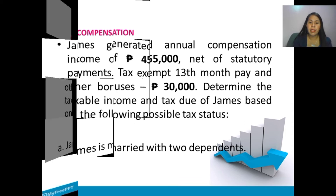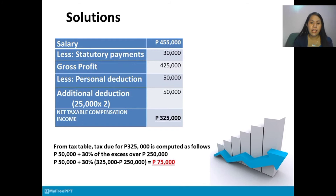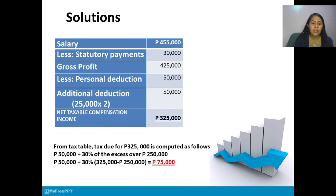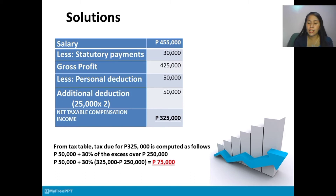James is married with two dependents. Solution: Salary 455,000 less statutory payments 30,000 gives gross compensation of 425,000. Less personal deduction of 50,000 and additional deduction of 50,000, so the net taxable compensation income is 325,000. From the tax table, tax due for 325,000 is computed as: 50,000 plus 30% of (325,000 minus 250,000). Our tax due in this problem is 75,000.